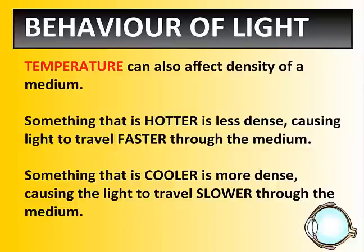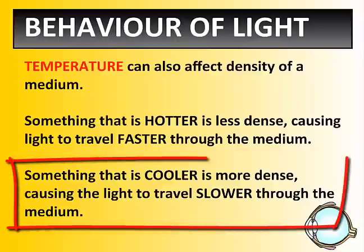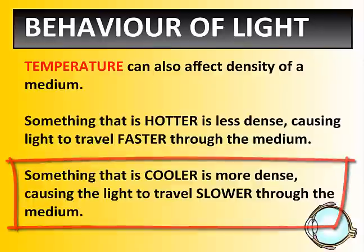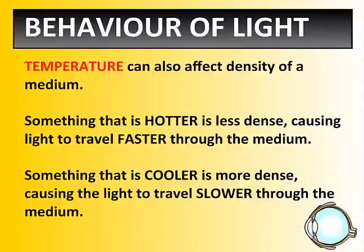If we take that same container of water and begin to cool it all the way to freezing — traditionally, if something is colder, it is more dense, and light travels slower through that medium. So if you increase the temperature, particles travel faster and it becomes less dense. If you decrease the temperature, something becomes more dense and light travels slower through the medium, because the particles are closer together.